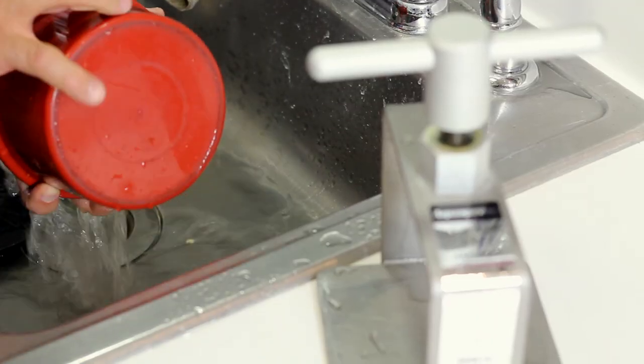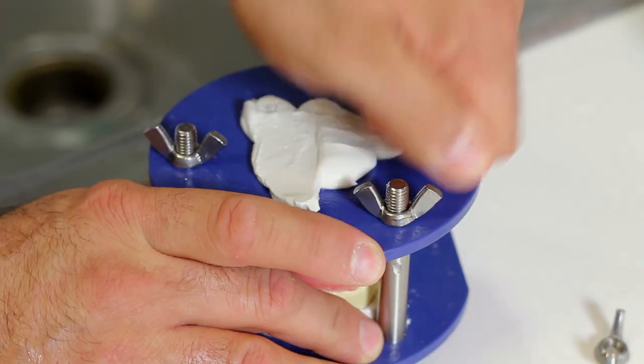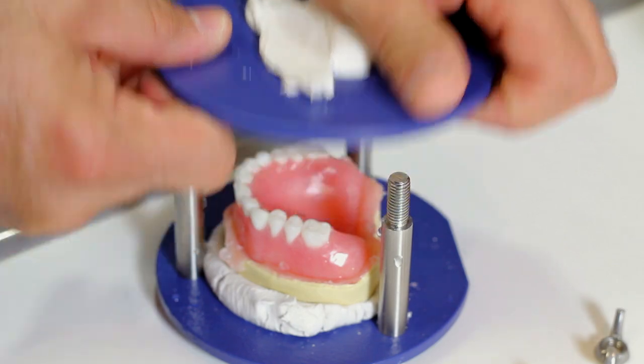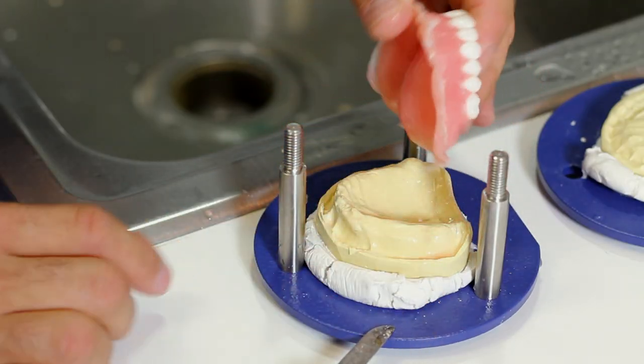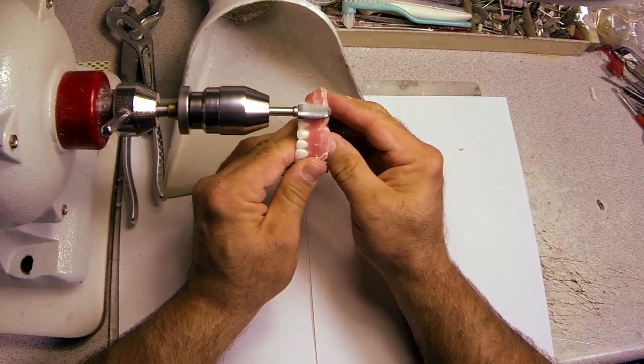Open the Aquapress, remove the jig, unfasten the wing nuts, and carefully remove the denture. Trim and polish as normal.